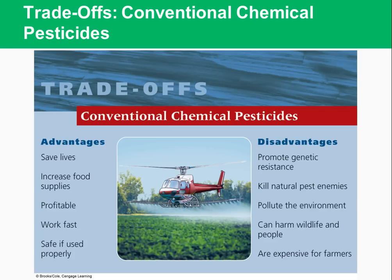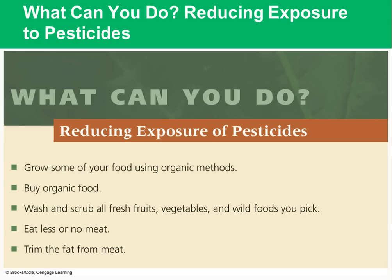Pesticides are a real threat to human health. Field workers who are exposed get sick, and there have been higher rates of cancer — estimated at 4,000 to 20,000 cases per year in the U.S. — from legally allowed pesticide residue in food. Scientists are concerned about genetic mutations, birth defects, nervous system and behavior disorders, and effects on immune and endocrine systems from long-term exposure. To reduce exposure: grow your own food using organic methods, buy organic, wash and scrub fresh fruits and vegetables, eat less meat or trim the fat from meat since many toxins are fat-soluble and bioaccumulate in fat.